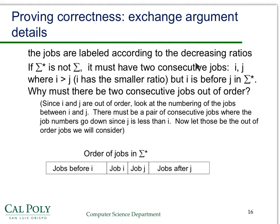Here's the critical step: the jobs are labeled according to decreasing ratios, and σ* is not the greedy ordering, so it must have two consecutive jobs where i is bigger than j — meaning i has a smaller ratio — but i comes before j in σ*. It's clear there have to be two jobs out of order, but why consecutive? Because between i and j there must be some pair of consecutive jobs where the numbers go down, since j is less than i and they can't keep increasing. That's what we focus on.